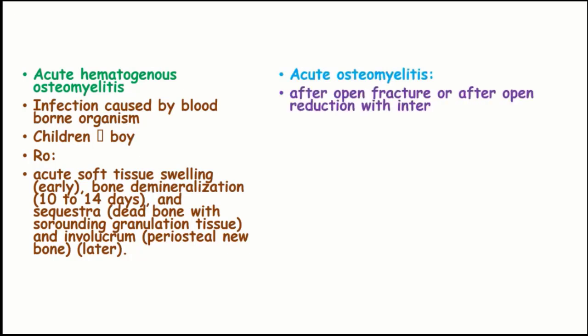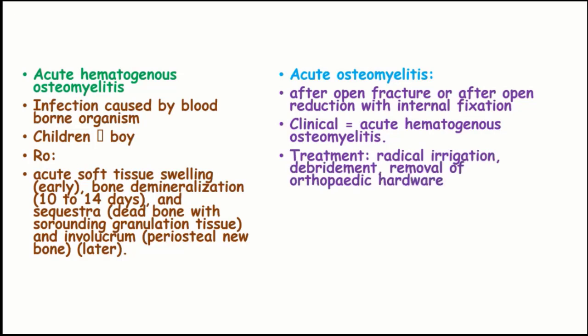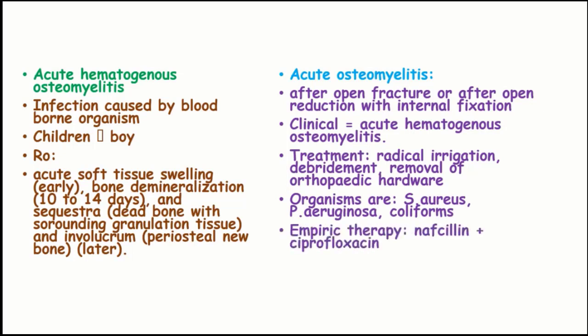Acute osteomyelitis occurs after an open fracture or a pain reduction with internal fixation, and the clinical features resemble those of acute hematogenous osteomyelitis. Its treatment is by radical irrigation, debridement, and removal of orthopedic hardware. Organisms responsible are Staphylococcus aureus, Pseudomonas aeruginosa, and the coliforms. Empiric therapy includes nafcillin with ciprofloxacin or vancomycin with third-generation cephalosporins.